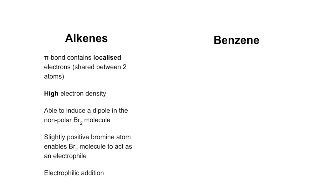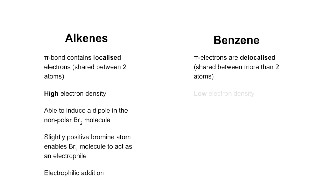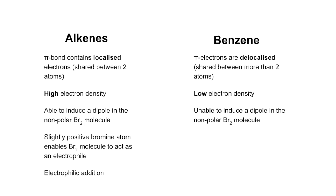Moving on to benzene, the pi electrons are delocalised — shared between more than two atoms. In benzene, the pi electrons are shared between all six carbon atoms in the benzene ring. That means the electron density is lower, so they can't induce a dipole in a non-polar Br2 molecule. Therefore, a halogen carrier catalyst is required to generate an electrophile.